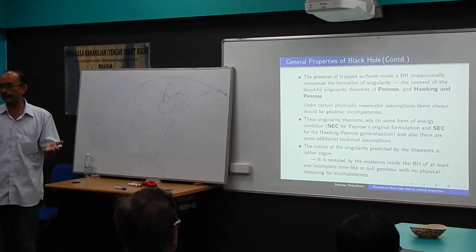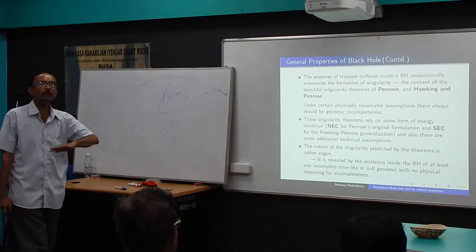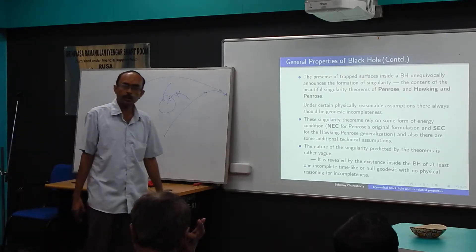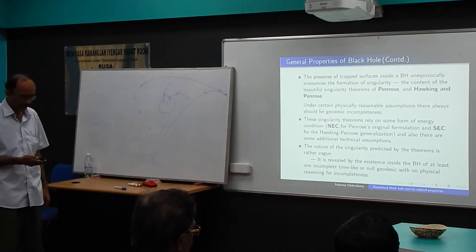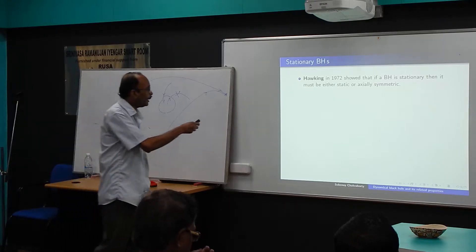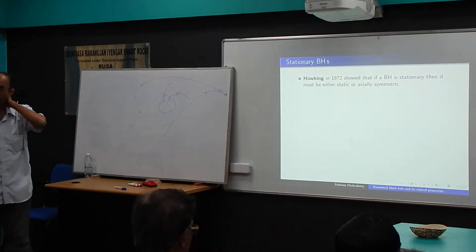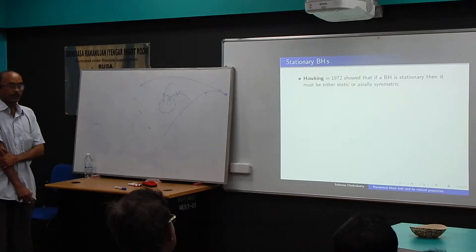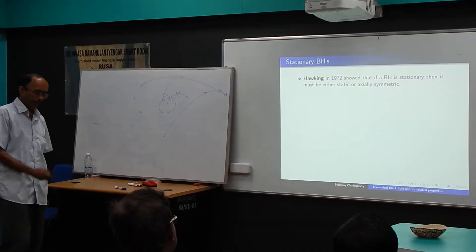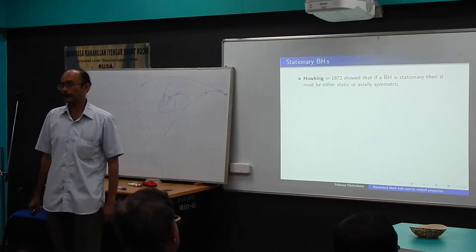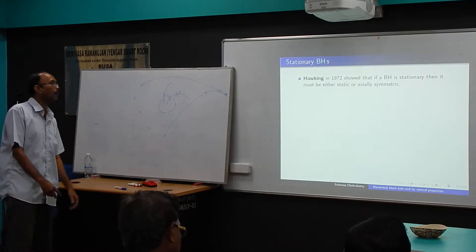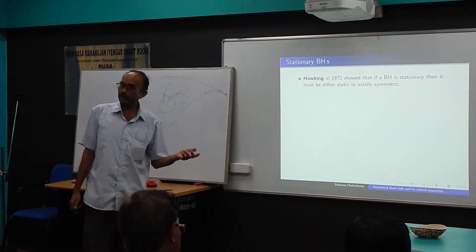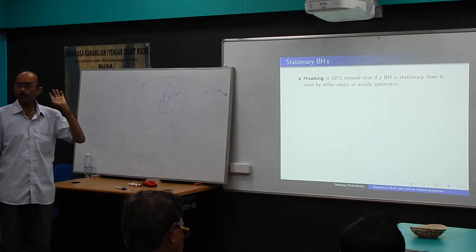Later, Penrose gave the cosmic censorship conjecture — that singularity is never naked — but that is only a conjecture, and there are theoretical examples where singularity may be naked. Now, in 1972, Hawking showed that if a black hole is stationary, there are only two possibilities: either it is static or axially symmetric. Static black holes are spherically symmetric; others are axially symmetric.